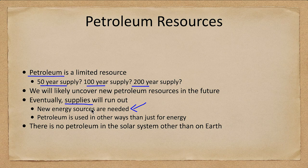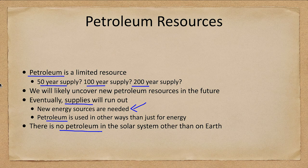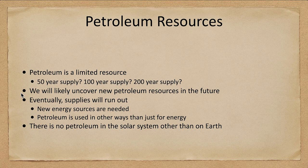We also use petroleum in ways beyond just energy. We will not find petroleum resources anywhere in the solar system other than on Earth — being a fossil fuel, it is confined to Earth, the only planet that has had life. Other energy sources such as solar energy or nuclear energy are possible alternatives, and deposits of things like uranium could potentially be found elsewhere in the solar system.